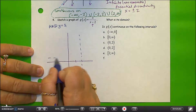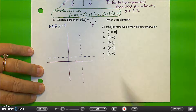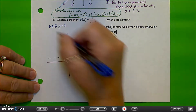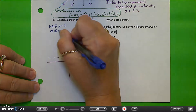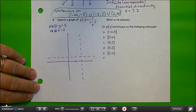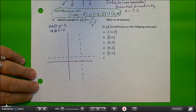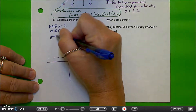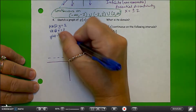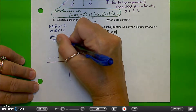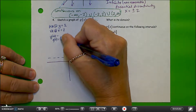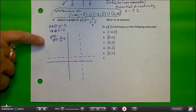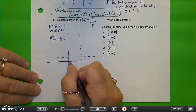I'm going to come in and sketch that in. We have a vertical asymptote at x equals 2. Another nice thing to do here is to look at the y-intercept. To find that, I'll plug in 0: g of 0 equals 0 over negative 2, which equals 0. So the y-intercept is 0, and the origin is on the graph.